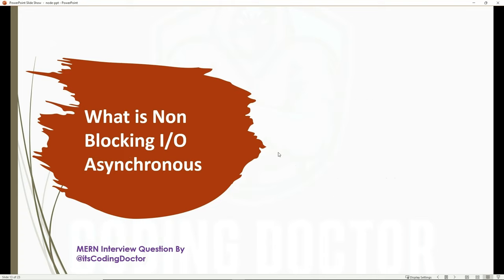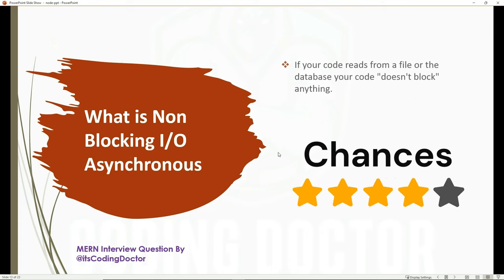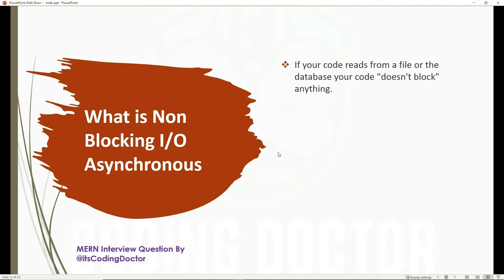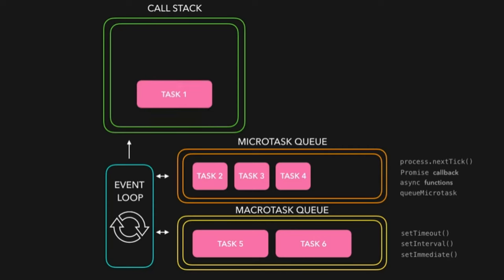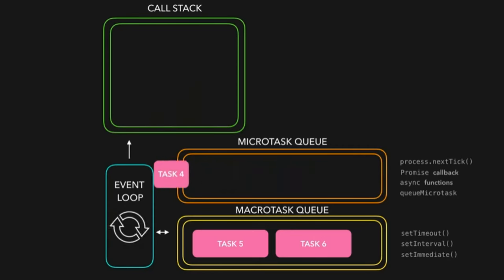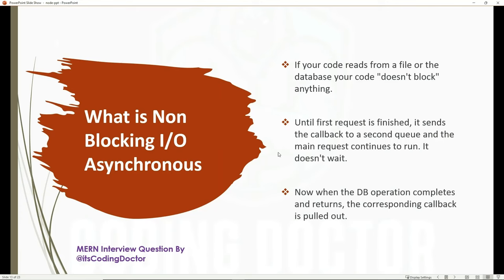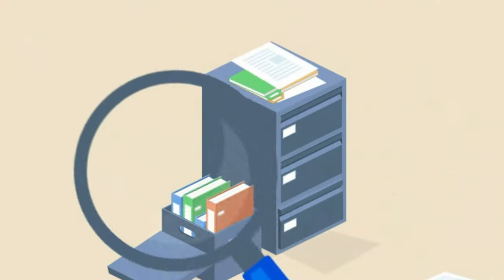The next question is: what is non-blocking I/O, or asynchronous I/O? Unlike blocking I/O, the code does not block anything here. If you read data from a file or database, other operations are not blocked. The callback is sent to a second queue and the main thread continues to run. When the database or file operation completes, the corresponding callback is pulled out and executed. That's how Node.js works.